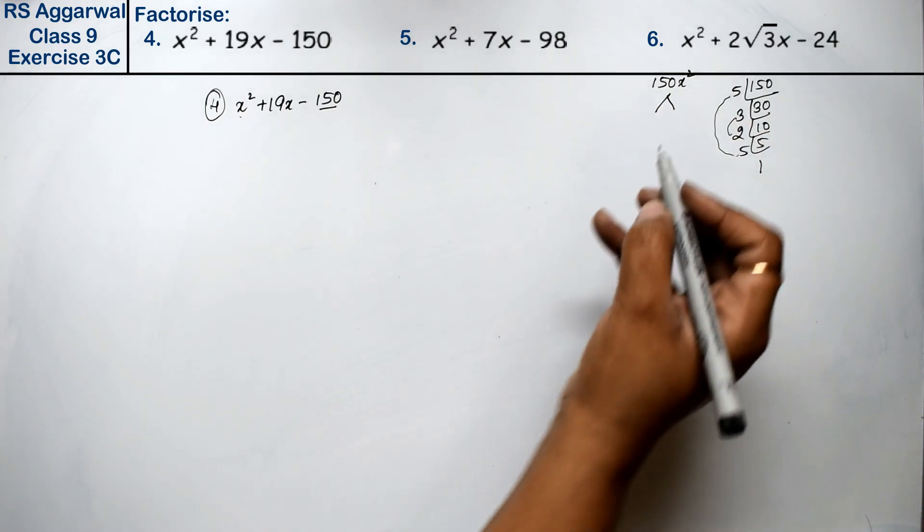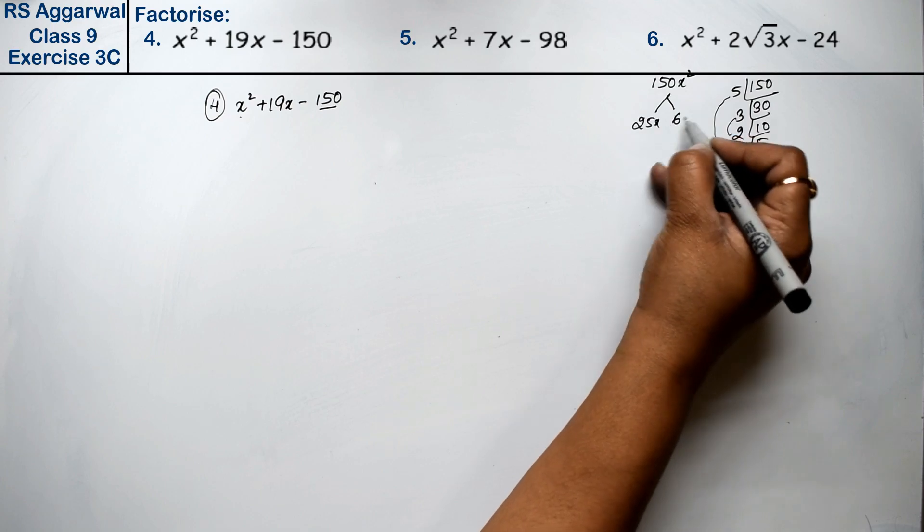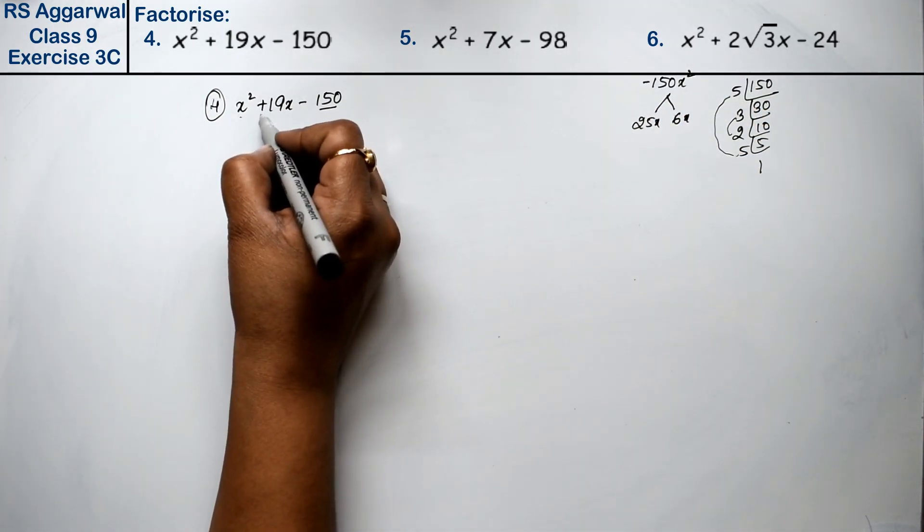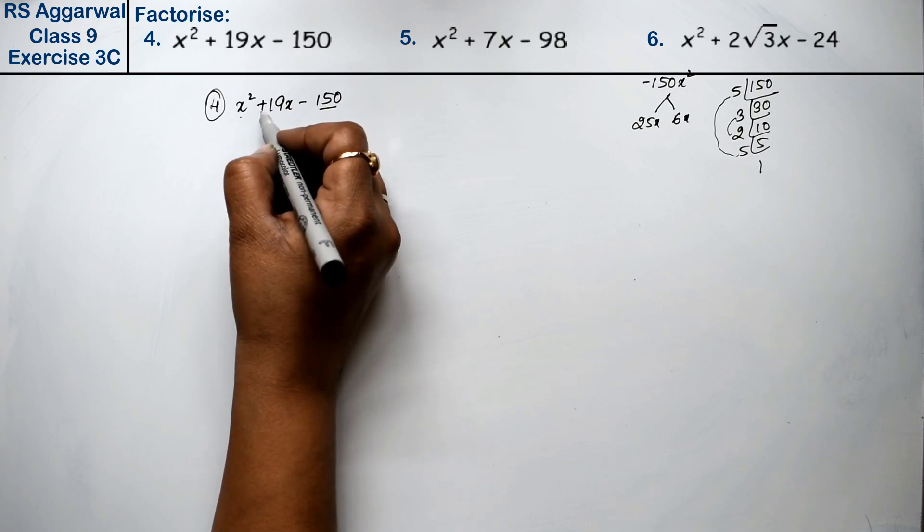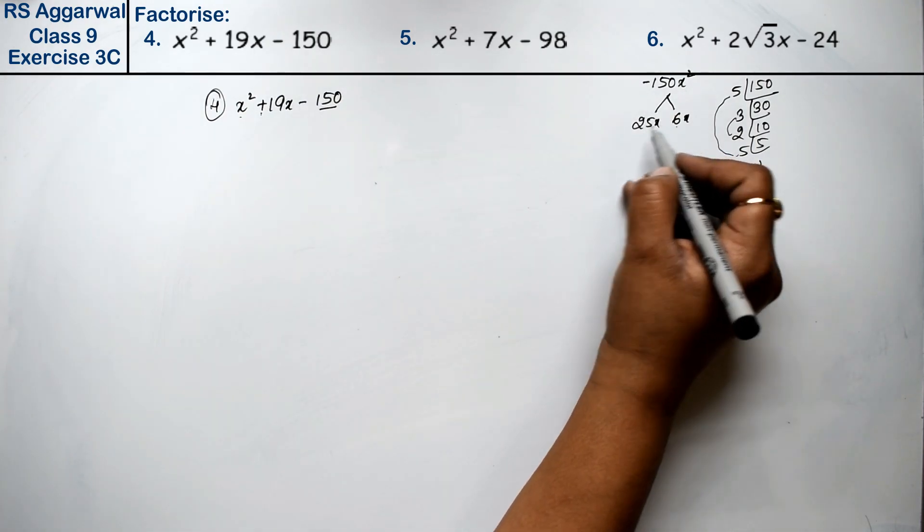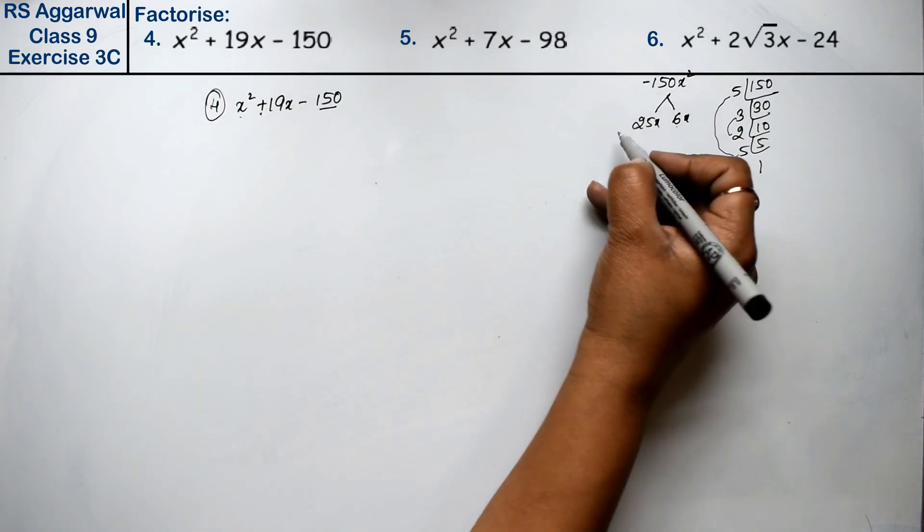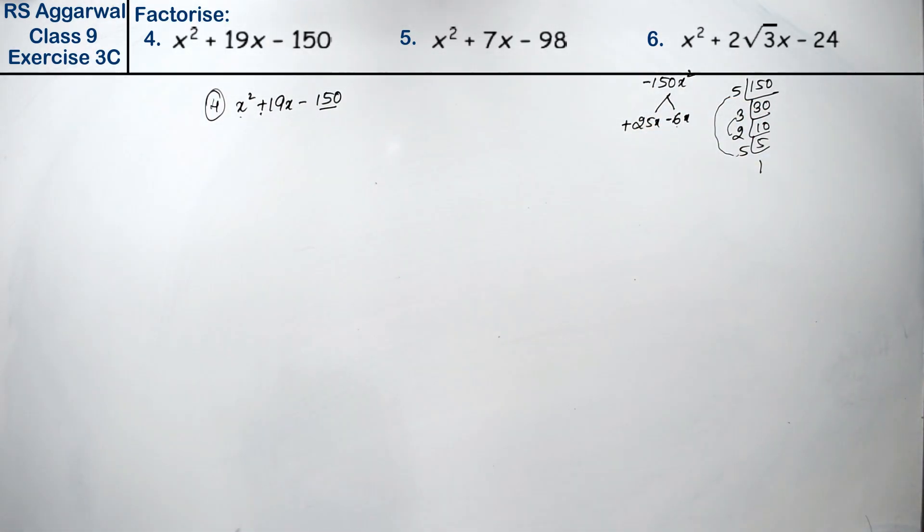So we have 25 and 6 times x. We have minus, so when we have plus and opposite sign, we have minus. This sign comes with this sign, and the sign that comes with this sign comes with the smaller number.